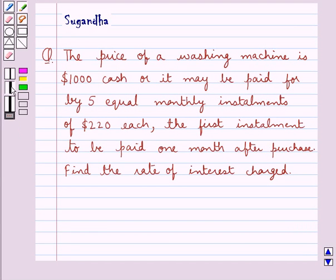Hello and welcome to the session. In this session we discuss the following question: the price of a washing machine is $1000 cash, or it may be paid for 5 equal monthly installments of $220 each. The first installment is to be paid 1 month after purchase. Find the rate of interest charged.